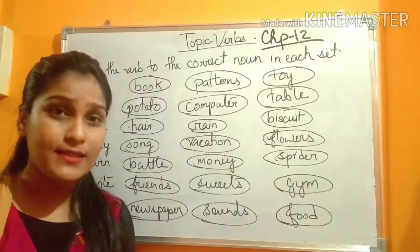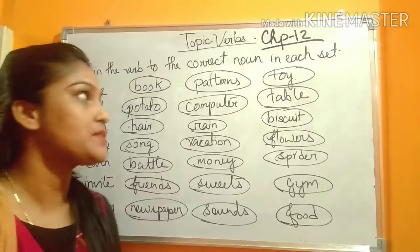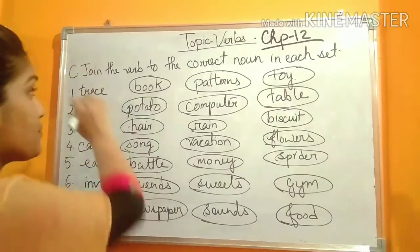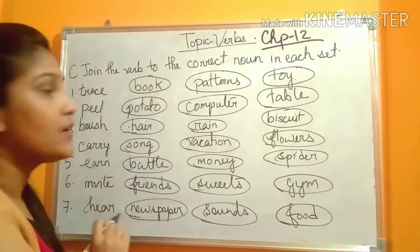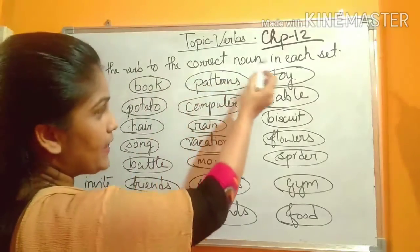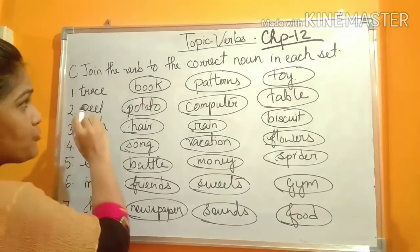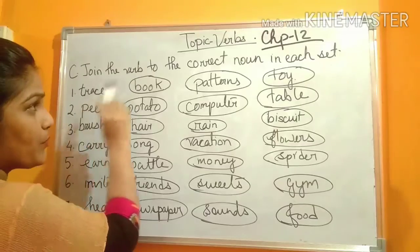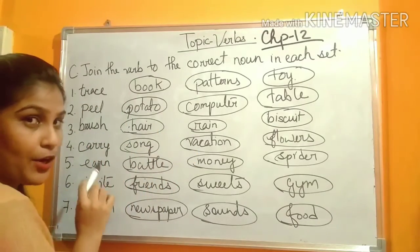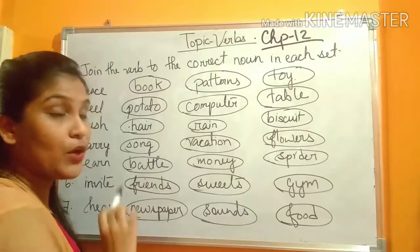Welcome back to English 2 class. In the last class we discussed questions A and B of chapter number 12, and today we will start with question number C. Join the verb to the correct noun in each set. The verbs are given and you have to join the verb with the correct noun, because certain verbs are used with only certain nouns — it is not used with all the nouns.